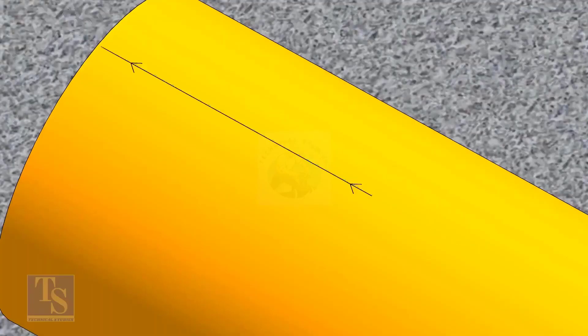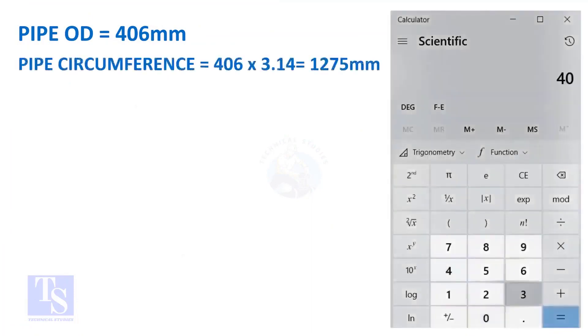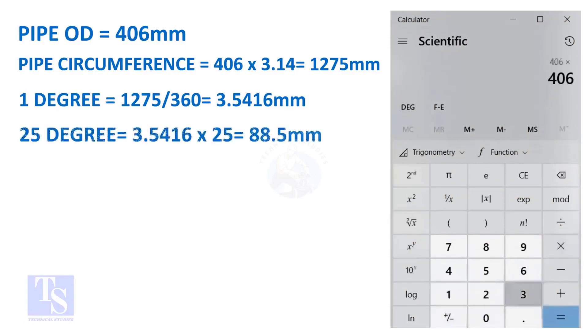Let us calculate the circumferential distance or arc length for 25 degrees. Multiply the OD by 3.14. You will get the circumference of the pipe. Divide the circumference by 360, you will get the arc length of 1 degree.